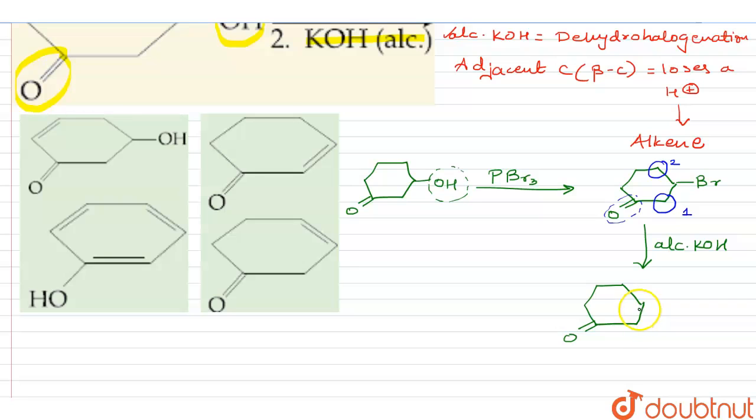So what has happened? Br− has left from here, whereas an H+ has left from here, and there is a double bond formation taking place over here. So basically, as you can see, this is the most substituted alkene, as well as the double bond is in conjugation with the C=O group over here. So that is the reason it is more stable and hence the major product.